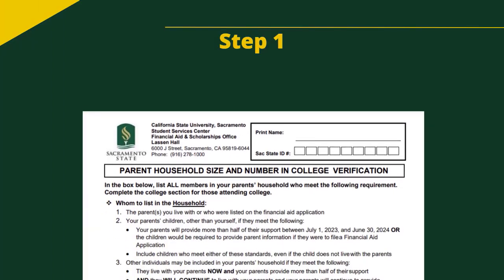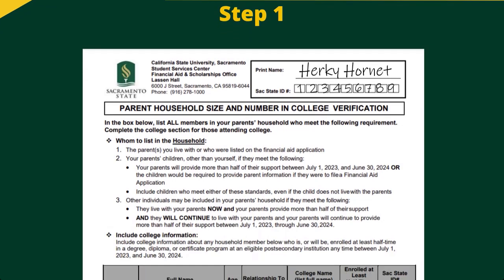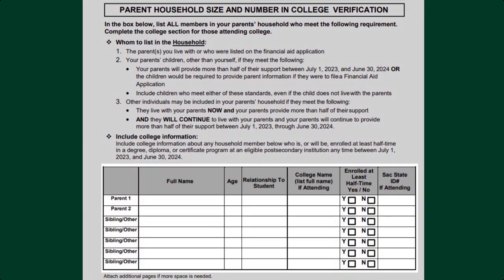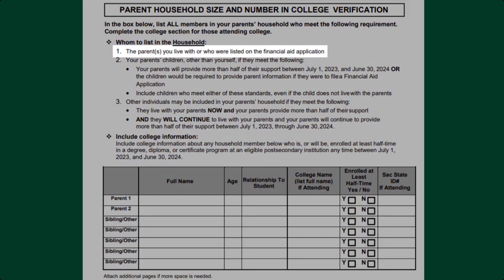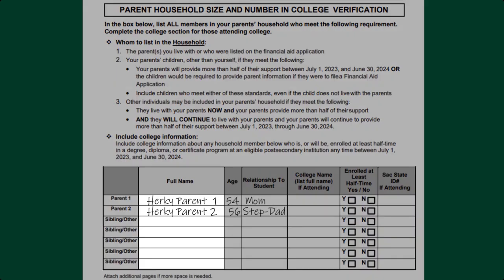Step 1: Complete your name and Sac State ID number on the upper right hand side of the form. Step 2: Fill the bottom table starting with your parent that was listed on your financial aid application. Include biological parent and/or step parent. Make sure for each household member to state full name, age, and relationship to you.